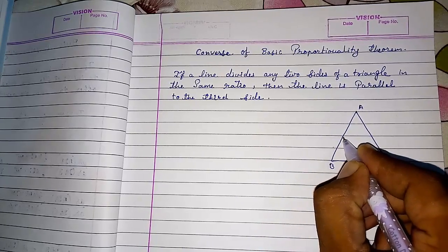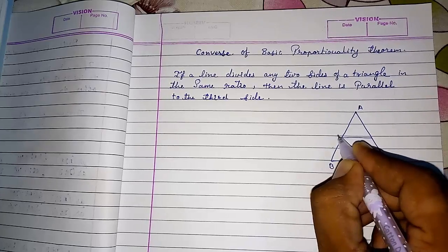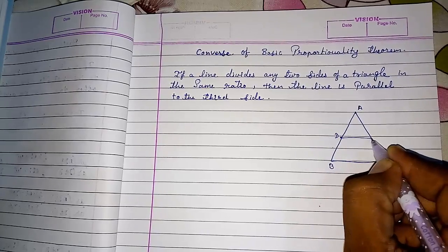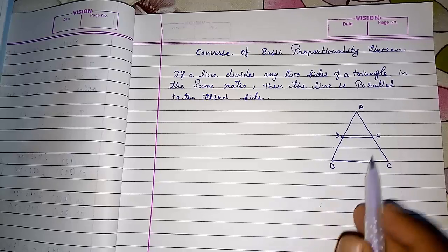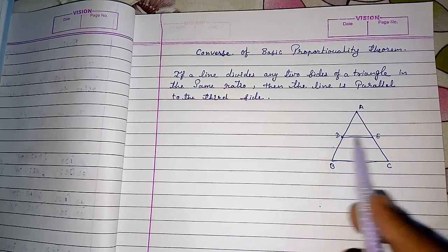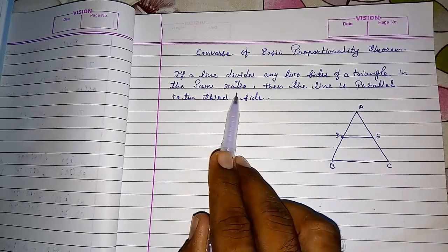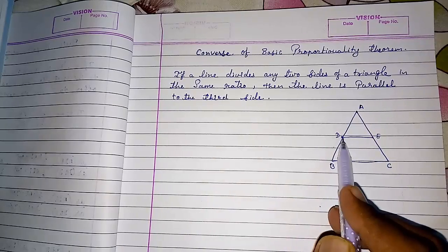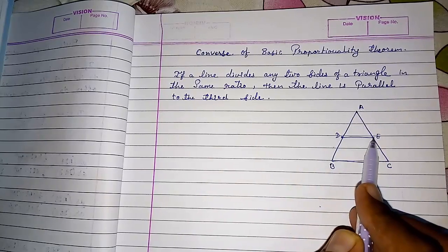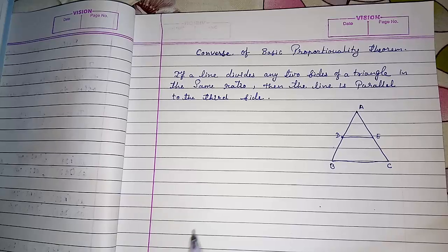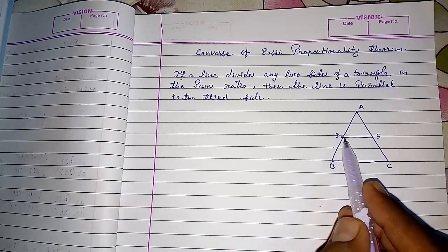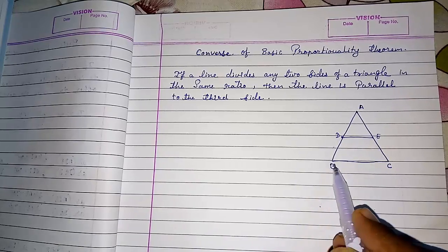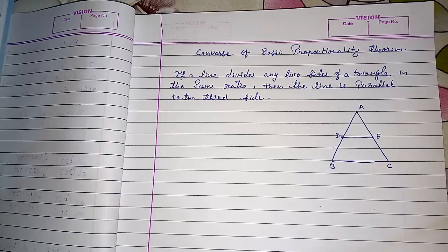here I will write DE intersecting. DE divides these two sides in the same ratio, means AD by DB equals AE upon EC. We have to prove then these two lines are parallel, means DE parallel to BC. We cannot directly prove that DE parallel to BC.